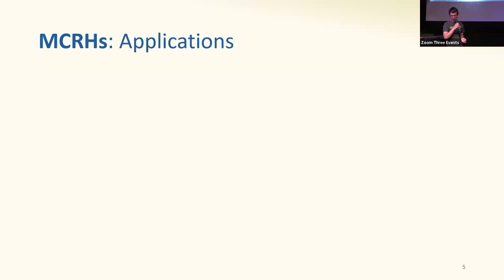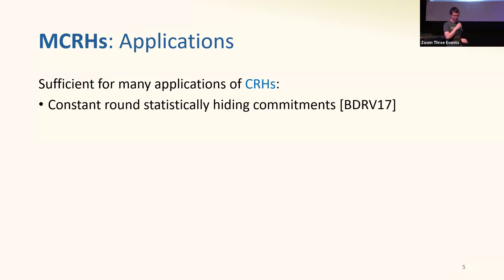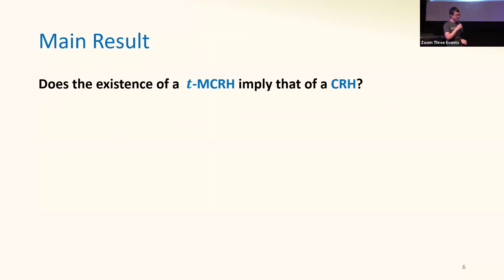Another reason to study multi-collision resistance is that recent results show that MCRHs often suffice in applications that traditionally require collision resistance. There are works showing that you can construct statistically sound arguments for NP, succinct arguments for NP, and various low-interaction zero-knowledge arguments, all from just multi-collision resistant hash functions. In light of these works showing MCRHs are often sufficient in place of CRHs, it's natural to ask whether multi-collision resistance is actually as powerful as collision resistance.